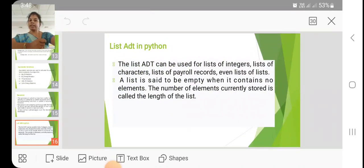List ADT in Python. The list ADT, that is abstract data type, can be used for list of integers, list of characters, list of payroll records, even list of lists. A list is said to be empty when it contains no elements. The number of elements currently stored is called length of the list.